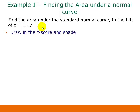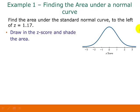So first we want to draw a picture of our distribution, draw in the z-score, and shade the area of the picture. So here's our picture. We're going to draw in 1.17, and we're going to shade the area to the left of that, since that's what it said in the question.